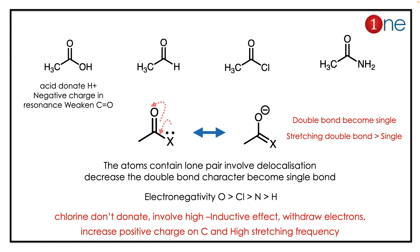The donation depends on electronegativity. Oxygen is more electronegative than chlorine, then nitrogen, then hydrogen. So oxygen normally does not donate electrons easily. But in an acid, it donates the electron quickly — it loses H⁺ quickly and resonates.